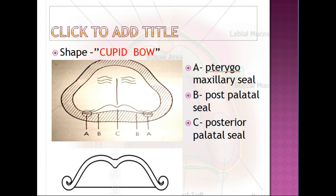The attachment of soft tissue to the posterior part of the bony hard palate is the true junction between the hard and soft palates. During functional movement, vibration takes place slightly posterior to this true junction — this is called the vibration line. The area between the true junction and the vibrating line is soft and compressible, and hence the posterior palatal seal is placed in this region.